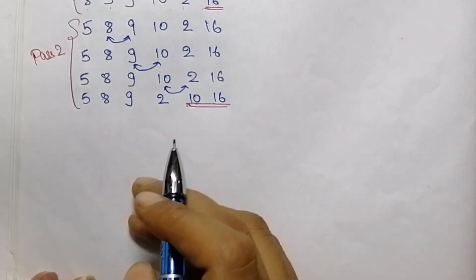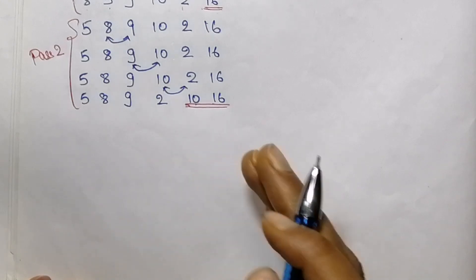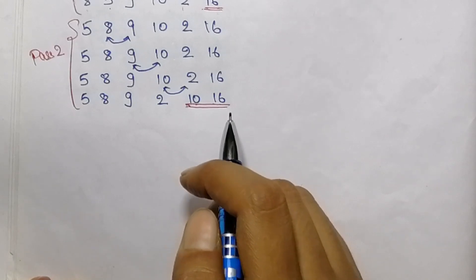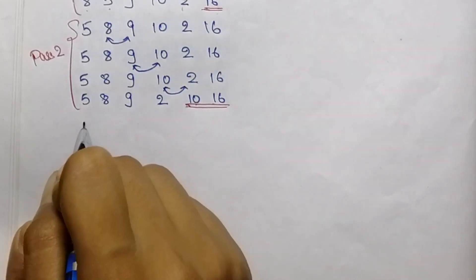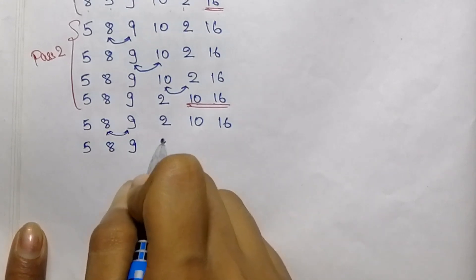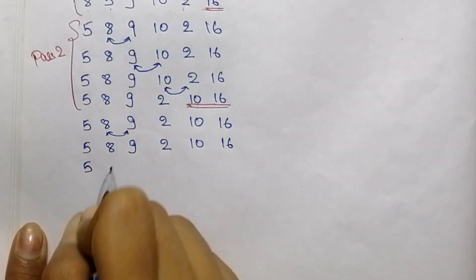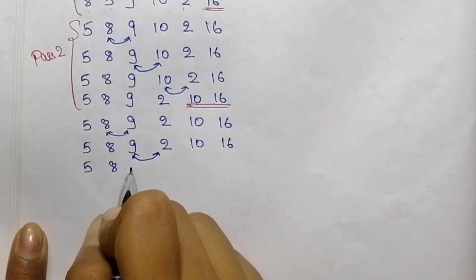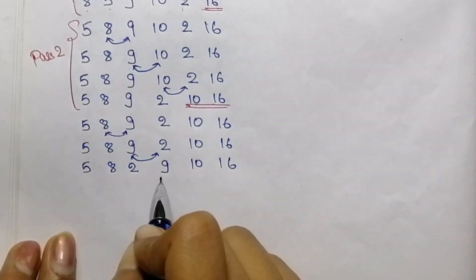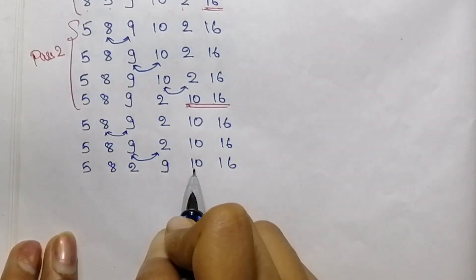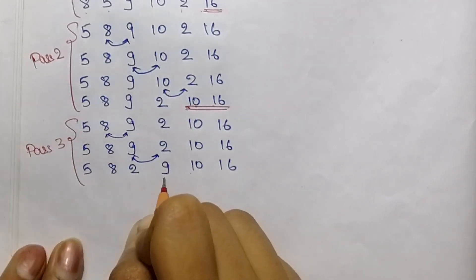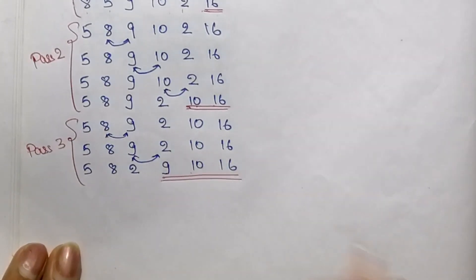Now in the third pass, the procedure will be repeated on the first n-2 elements of the array because the last 2 elements are already in their sorted order. So 5 is compared with 8 — no need of swapping. Then 8 is compared with 9 — again, no need of swapping. Now 9 is compared with 2; we need to swap them as 9 is greater. We will not compare 9 with 10 or 16 as they are already in their sorted order. This is pass 3, and we got the last 3 elements in their sorted position.